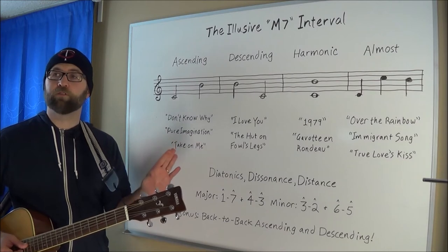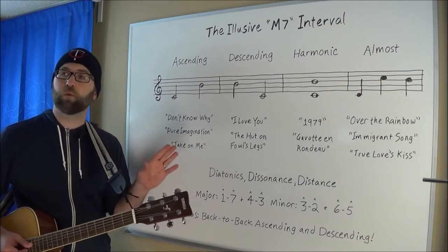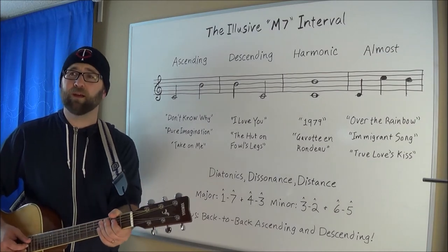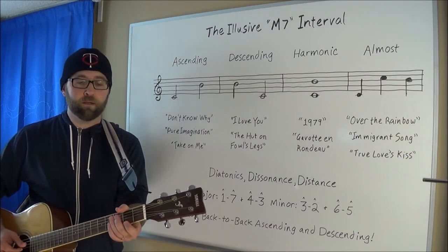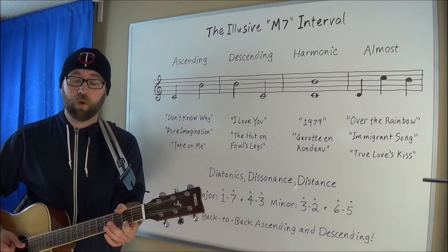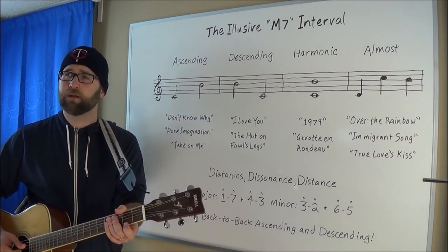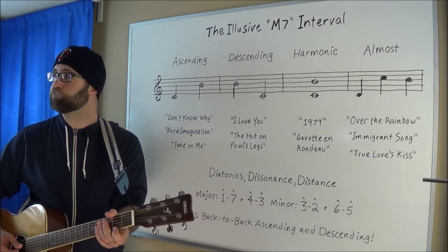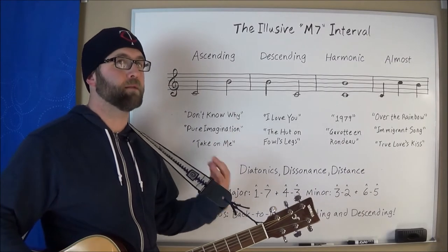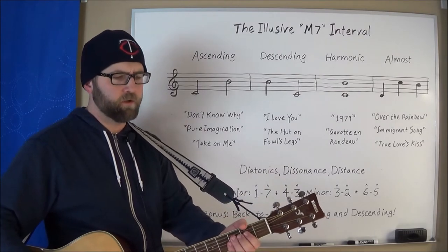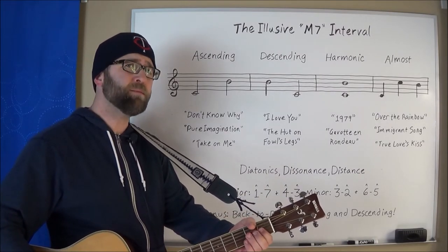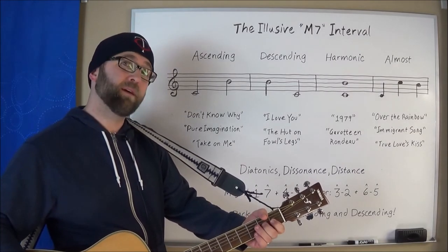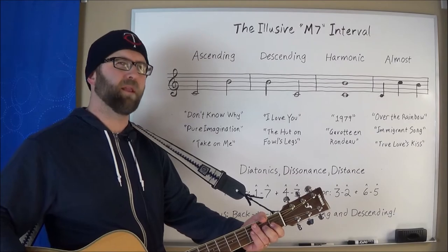Next one is from 'Pure Imagination,' the song from the original Willy Wonka and the Chocolate Factory. It's in the middle of the line: 'Come with me and you'll be in a world, a world of pure imagination.' It's a funky interval for a funky world of chocolate. Last one in this column is 'Take On Me' by AHA — 'take on me, take on me' — one major seventh interval, then an octave. Love it. Public service announcement: the lyrics for the last part of that song are 'in a day or two,' not whatever you thought it was.